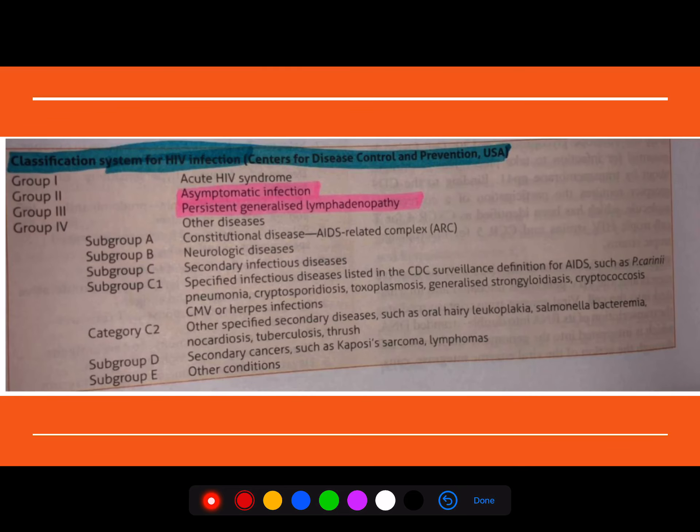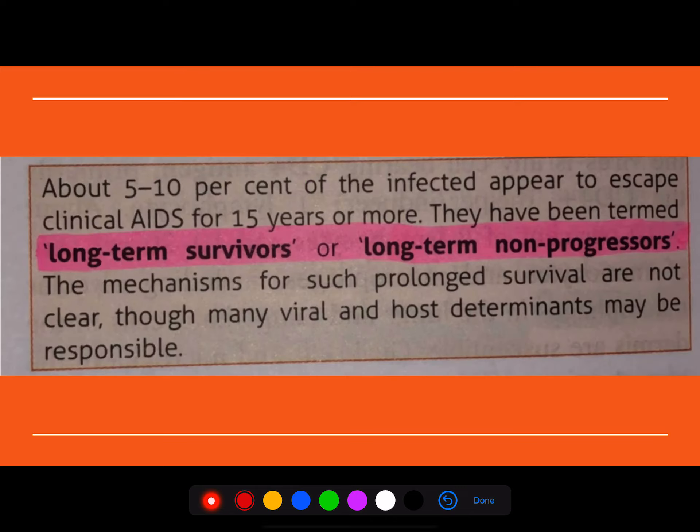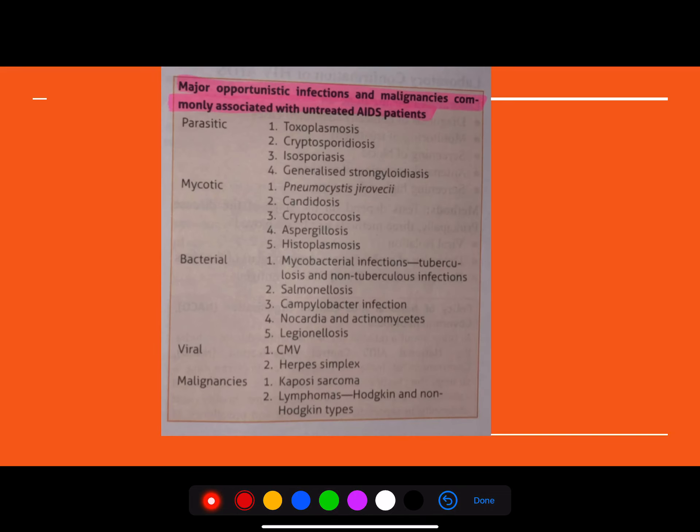And of course, you are well familiar with Center for Disease Control and Prevention USA has grouped the HIV classification into group 1, group 2, group 3, group 4 and the different subtypes and categories. So what are long-term survivors or long-term non-progressors? About 5 to 10% of infected patients appear to escape from clinical features of HIV for more than 15 years. So a category of patients will be dropped under this terminology, that is long-term survivors.